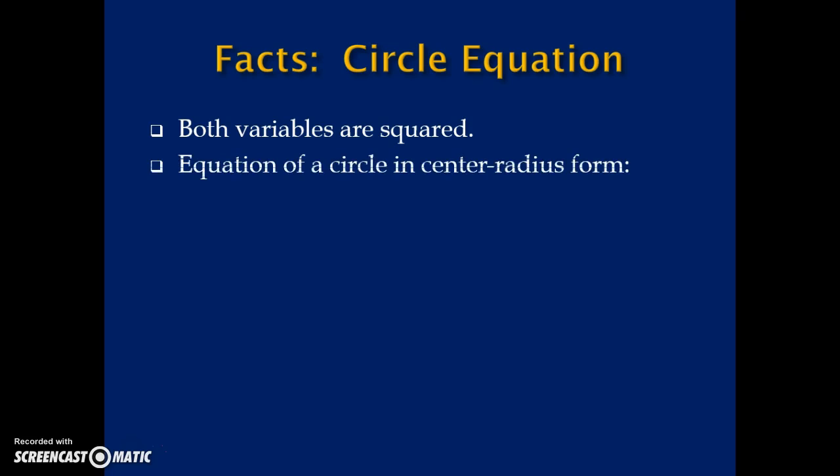So in a circle, both variables are squared. We generally use X and Y. The standard center-radius form for the equation of a circle is the quantity (X - H)² plus the quantity (Y - K)² equals the radius squared, where H and K are the X and Y coordinates for the center point of the circle.